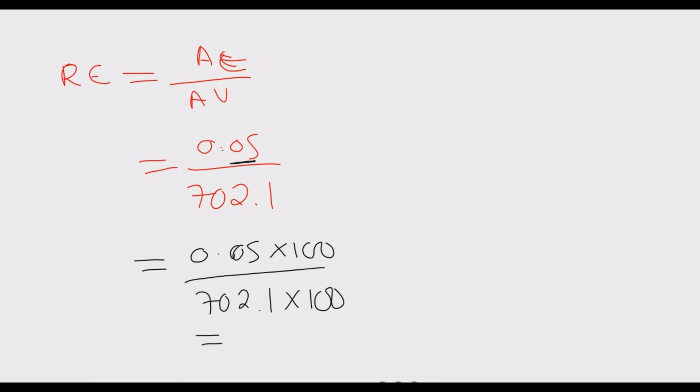Once we multiply that, we end up with 5 over 70,210. Now we simplify. We divide by 5 on both sides.